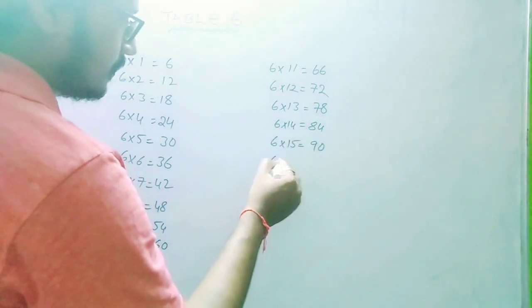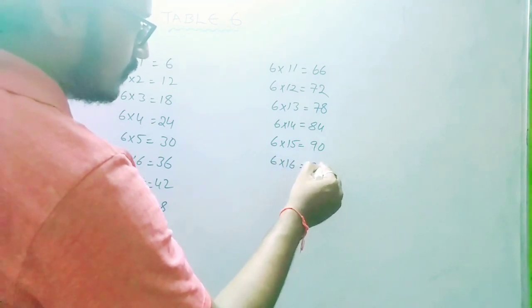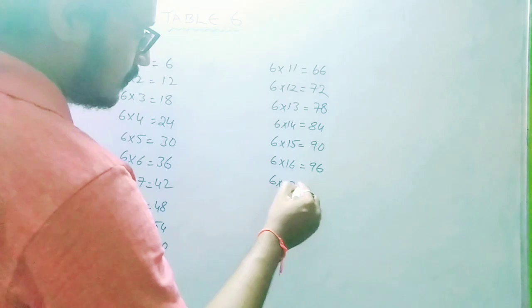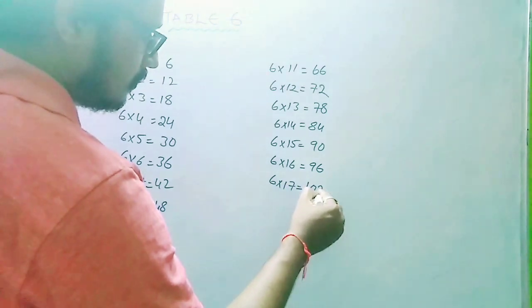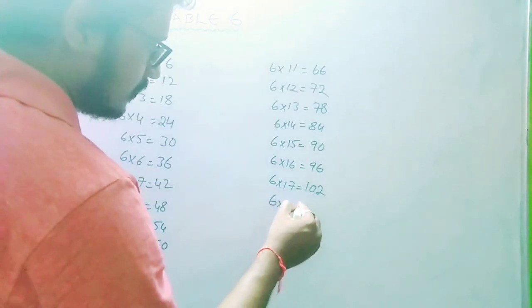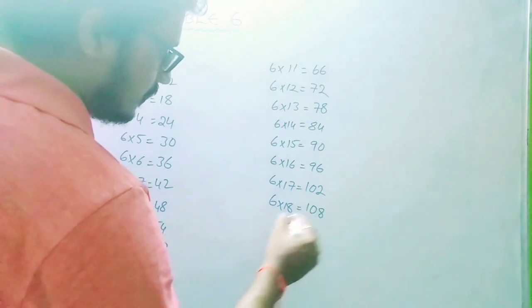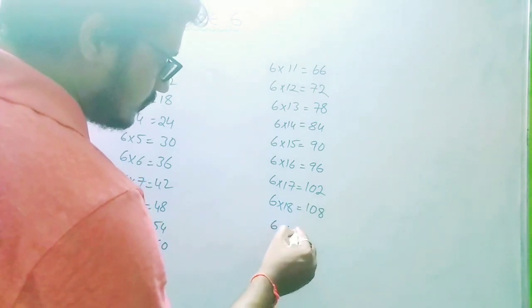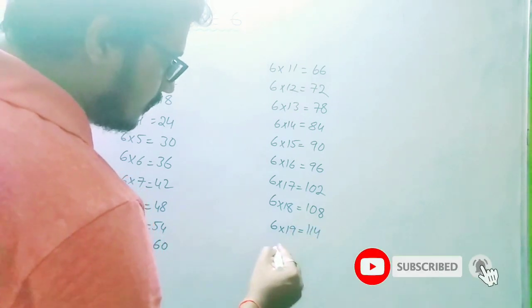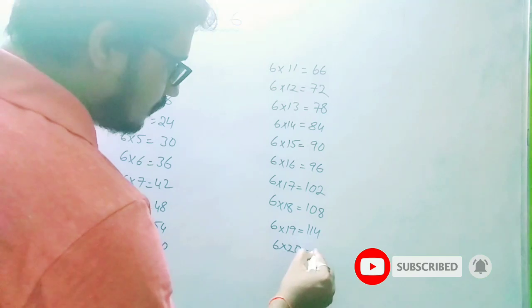6 16s are 96, 6 17s are 102, 6 18s are 108, 6 19s are 114, 6 20s are 120.